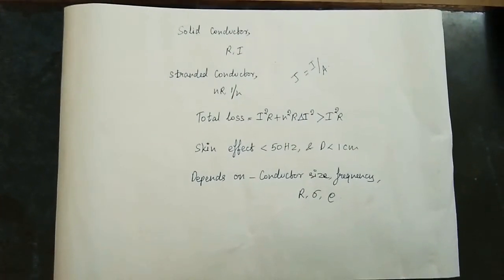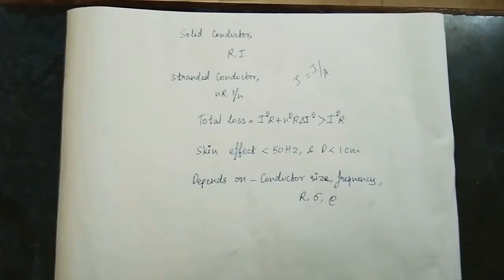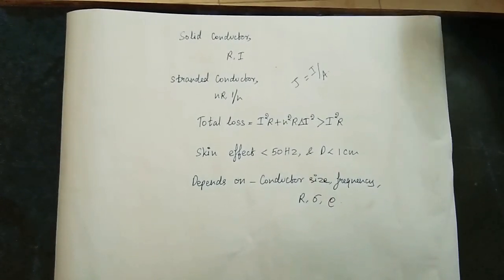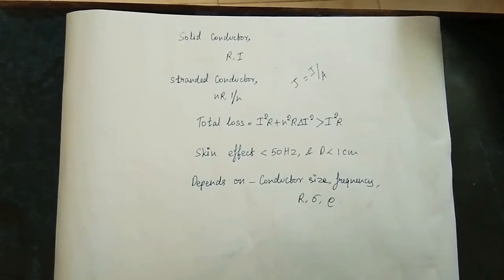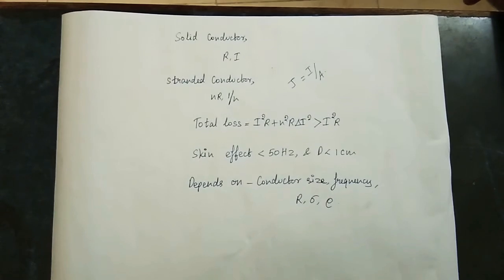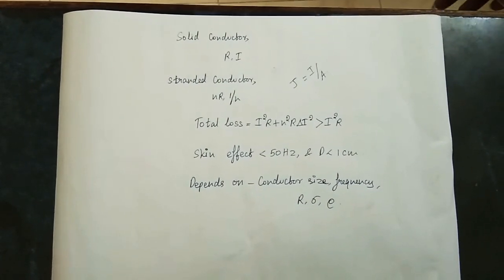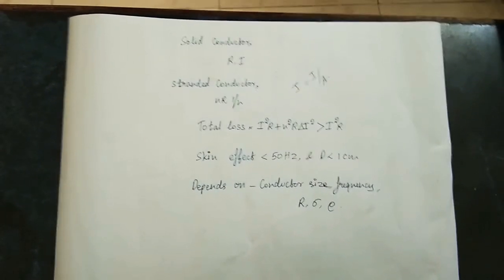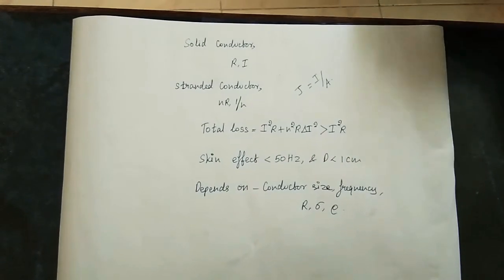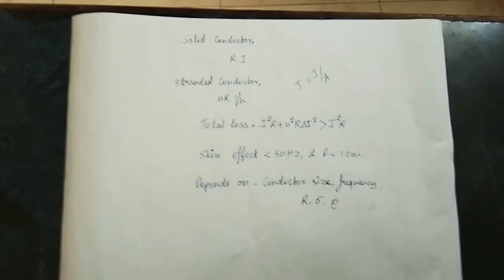This is very bad. The skin effect loss can be less if the frequency is less than 50 Hz and the diameter is less than 1 cm. In the transmission line, if the diameter of your conductor is less than 1 cm and the frequency is less than 50 Hz, the skin effect is very low. So the skin effect depends on temperature, size, frequency, resistivity, and permeability. These are the major factors causing impact.